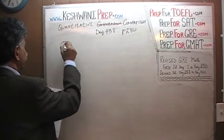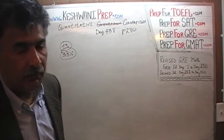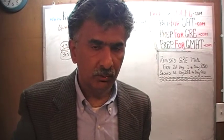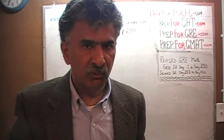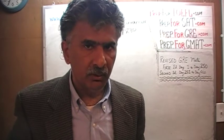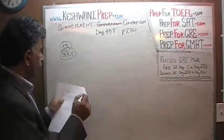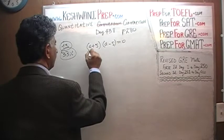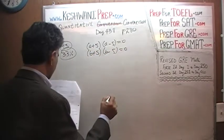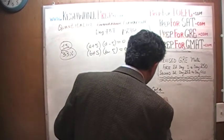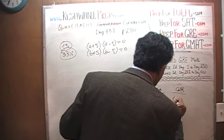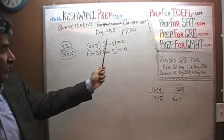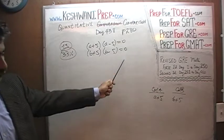Let's do number 13. Only a third of the people who took the exam got it right — two-thirds missed it. It is very important that you pause the video and solve it yourself first. Here is what we are told: we have the equation (a + 5)(a − 5) = 0, and also (b + 5)(b − 5) = 0. What we are being asked to compare are the two quantities a + 5 versus b + 5. Pause the video.